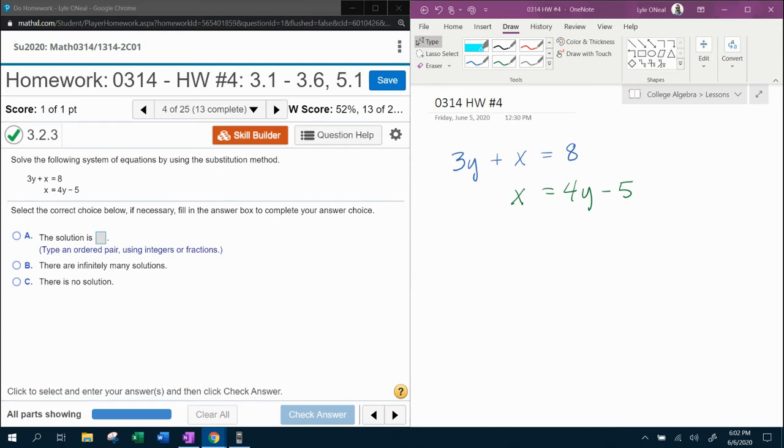So first things first, substitution works best if you have a variable by itself. And we can see in this second equation that we do have x by itself. And what that means is I'm going to be able to take the 4y minus 5, since that's what x is equal to, and I'm going to be able to replace the x in the first equation with 4y minus 5.